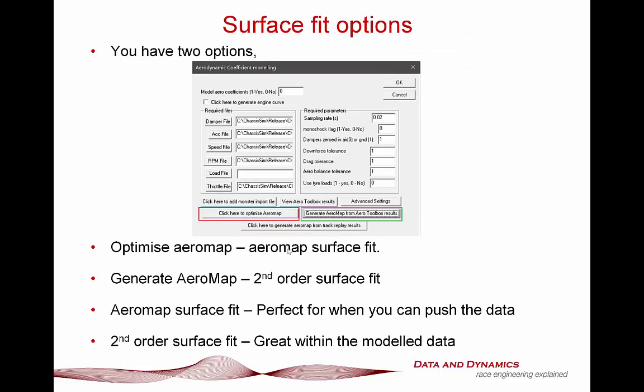Now let's talk about surface fit options. In ChassisSim, when you're doing your aero modelling, you've got two options. You can click to optimize the aero map, highlighted in red, or the green option: generate aero map from the aero toolbox results. The optimize aero map uses the aero map surface fitting we've spoken about in previous tutorials and in the ChassisSim boot camps. The green option, generate aero map, just uses a simple second order surface fit.